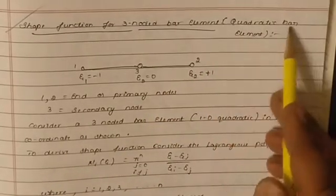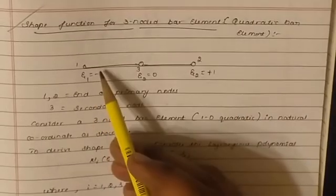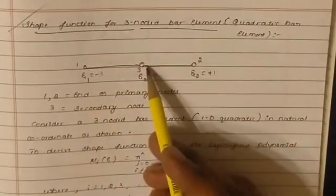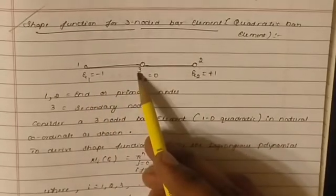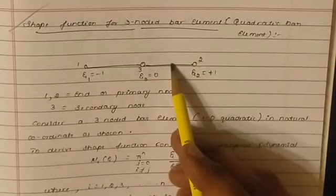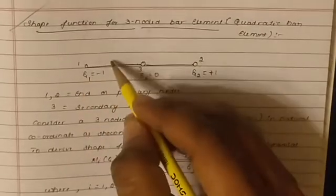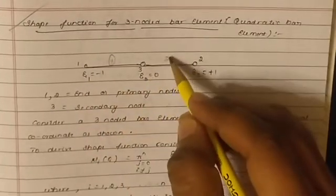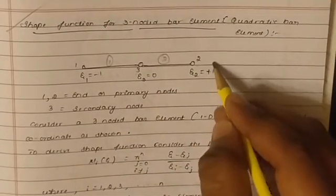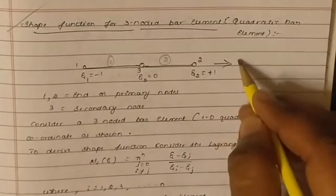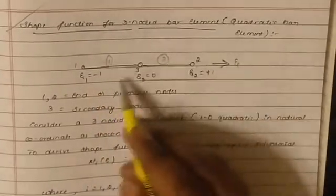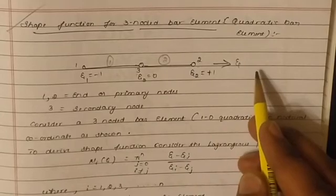Earlier we discussed the linear element; now we will discuss the quadratic bar element, or 3-noded bar element. We have 3 nodes — 1, 2, and 3 — and 2 elements: element 1 and element 2. We are deriving it in the natural coordinate system, that is the zeta coordinate. Since it's one-dimensional, we have only the zeta coordinate system.